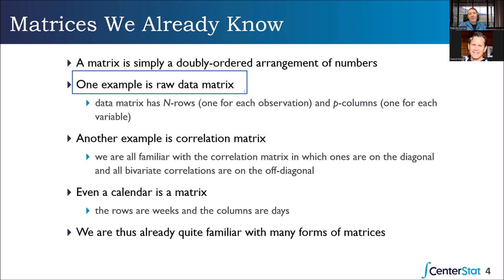If we have a sample of 100, there are 100 rows. We have p columns, where p is the number of variables. I am in the first row, and my response to variable one is the first element, second, third, fourth, fifth. Dan is second, and it goes all the way down to however many subjects we have. That's a data matrix.